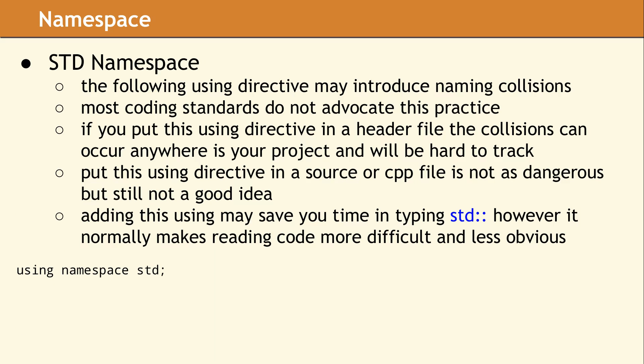This using declaration will make every STD identifier visible in the global namespace until the end of the current source file or translation unit. With this directive, you can omit the STD colon colon and save yourself a few seconds of typing and a few extra keystrokes. However, you're probably going to spend an hour or more when you have to track down a naming conflict or decipher if the name set refers to STD set or a data member in your class. Most coding standards really recommend that you don't use this construct even in a single source file.